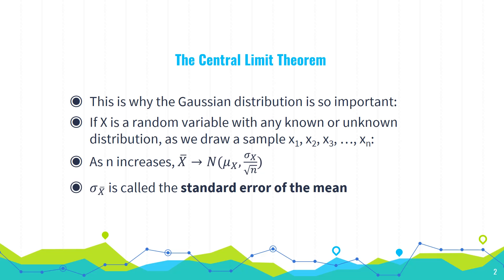Here is the Central Limit Theorem. As the sample size n increases, the distribution of the sample mean — this is capital X-bar, the random variable which models the mean of our sample — is going to get closer and closer to a normal distribution, with a mean equal to the population mean and a standard deviation equal to the population standard deviation divided by the square root of n. So roughly speaking, no matter what your population looks like, we can use the normal distribution when modeling or calculating probabilities relating to the sample mean. Things tend to converge to a normal distribution.